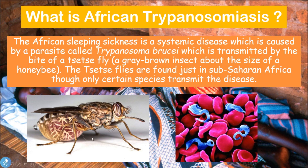The tsetse fly is greyish-brown in colour and about the size of a honeybee. These flies are indigenous to sub-Saharan Africa, but only certain species are known to transmit this disease. The flies carry the parasite Trypanosoma brucei, and when an individual is bitten by this fly, the parasite is transmitted from the fly into the human — this is how humans become infected.